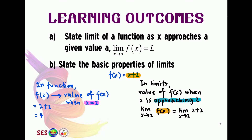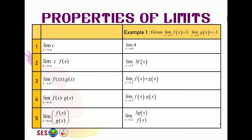Before we go to the interesting part of this chapter, as with many other topics before, let's start with the properties of limit. The first one is: if the function is a constant, then the value of the limit is also the same constant. Take a look at this example here. We want to find the value for a function when x is approaching 0. Our function fx equals to 4, which is a constant. Therefore, the limit of a constant function is that same constant, so the answer here is just 4.